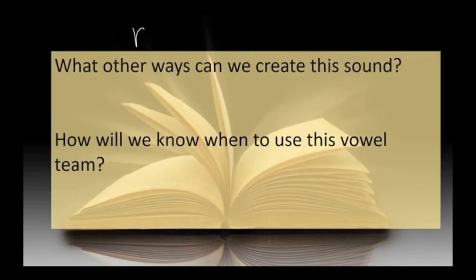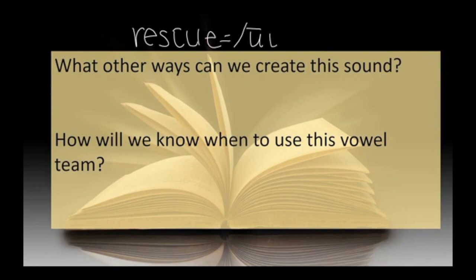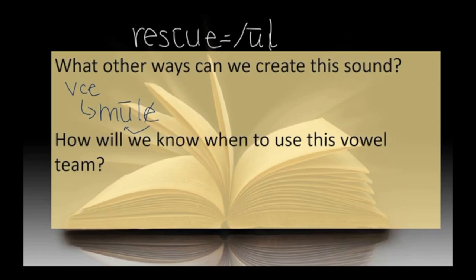So we're going to talk about the word rescue, where UE makes our long U sound. We talked before about how with a VCE word — like mule — the U becomes long because this silent E makes the U long. Any word that follows the VCE pattern with the U could have that long U sound. It can also have the OO sound we talked about before, like rule.